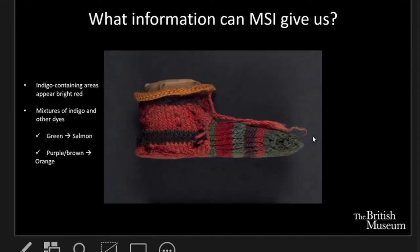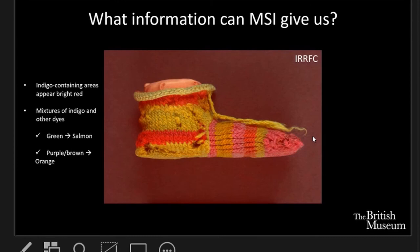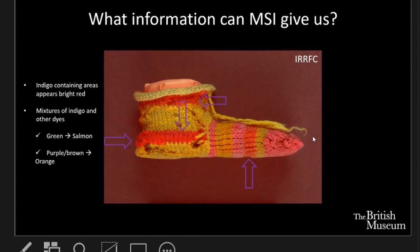Another technique very useful in investigating mixtures is infrared reflected false colour images. Here we have an image that combines information provided by the visible and infrared reflected images into a false colour image, where the colour is very characteristic of the properties of that material. The indigo-containing areas appear bright red, but mixtures of indigo and other dyes are also indicated by different colours — shades of salmon in the case of mixtures with yellow, and brighter orange in the case of mixtures with red dyes such as madder, which appears yellow in false colour.